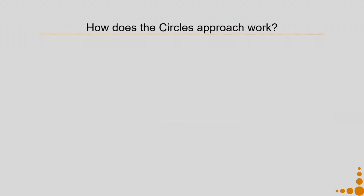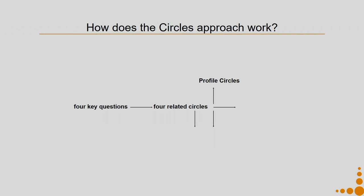Circles of Social Life is an approach that guides engaged and collaborative practice in making our cities, locals and organizations more sustainable, resilient, adaptable and livable. Circles of Sustainability is a method within this particular approach. How does this circles approach work? There are four key questions, each related to the four circles: the Profile Circles, the Process Circles, the Engagement Circles, and the Knowledge Circles.